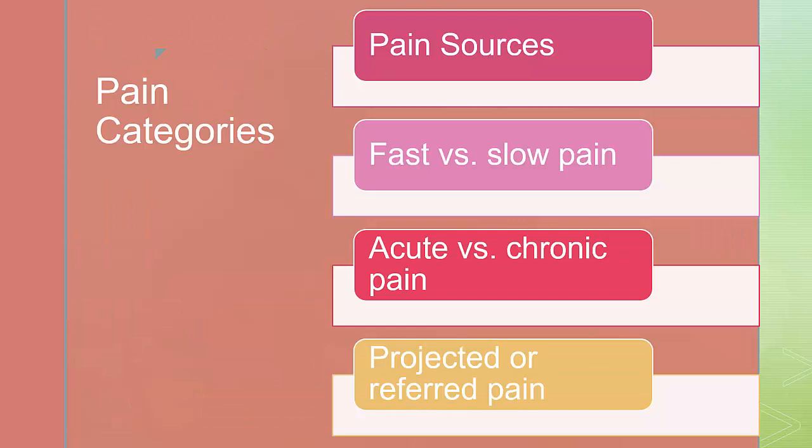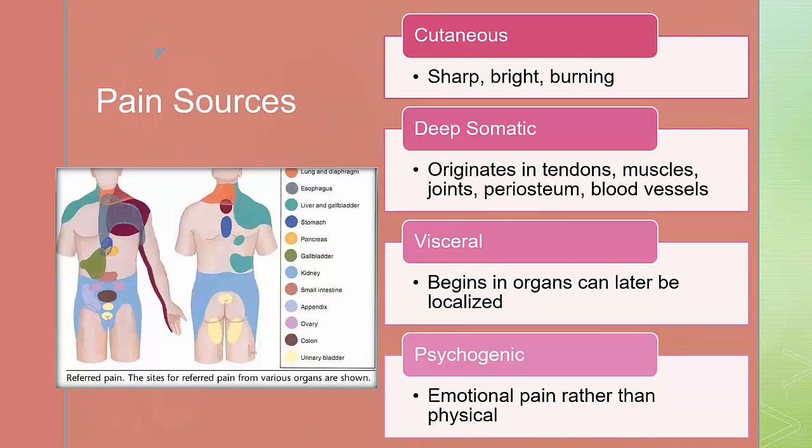Pain categories. Pain is a major indicator of injury. Pain is an individual and subjective response, meaning no two patients will describe or respond to pain the exact same way, despite having the same injury. There are some different factors to consider: the pain source — what type of tissue is injured; fast versus slow pain — does it happen very quickly or is it slow to develop; acute versus chronic — did it happen as a result of a traumatic injury or over a period of time; and is it projected or referred. Projected pain may occur in a different spot than the actual injury, and referred pain travels to other areas. There are four sources of pain: cutaneous, deep somatic, visceral, and psychogenic.